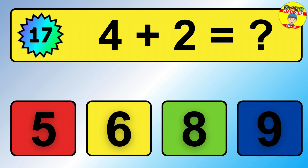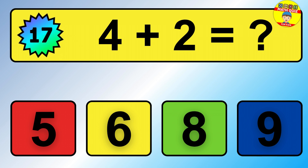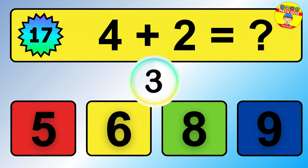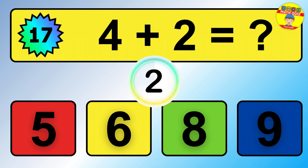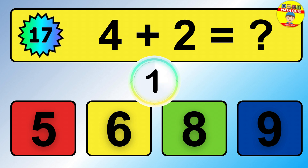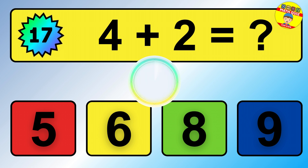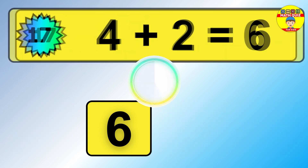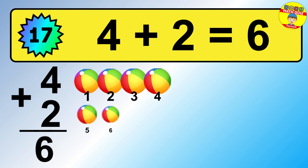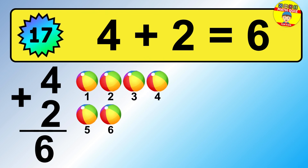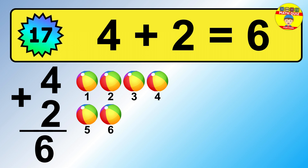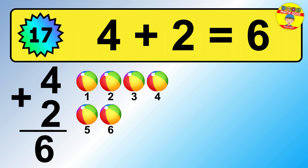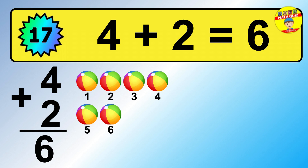Question 17. 4 plus 2 equals what? So the answer is 4 plus 2 is 6. Let's count it: 1, 2, 3, 4, 5, 6.